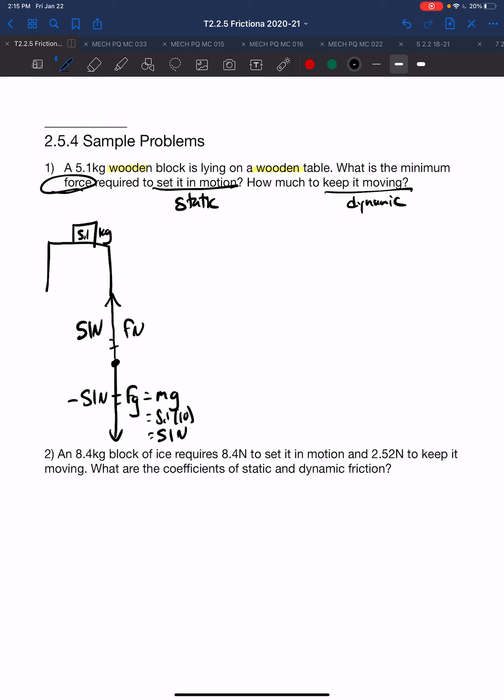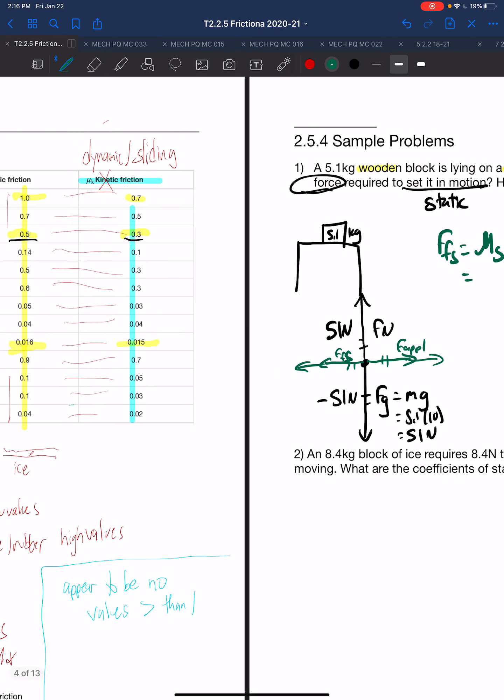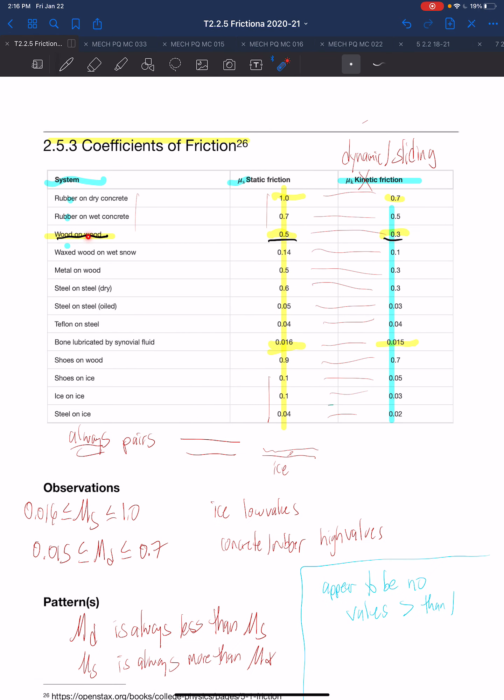We learned previously that when we apply a force and an object is stationary, the force of friction static and the force applied will be equal and opposite to each other. As we increase the force applied, the force of friction will increase until we reach the maximum possible force of friction, in which case it will break free. So if we want to know the force of friction static, we need mu static times the force normal. This is where knowing it's wood-on-wood comes into play. When we look at our table of values, wood-on-wood static is 0.5 and dynamic is 0.3.